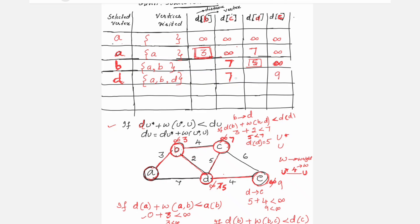Out of {7, 9}, the minimum is 7, and the corresponding vertex is C. Include C in the selected vertex and visited vertices. Values for the first three columns are now finalized. The only remaining value to check is d(E) — whether 9 will be retained or updated.